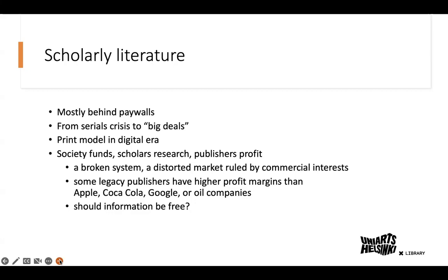The serials crisis means universities have money to buy even fewer journals. International commercial publishers introduced the 'big deal' model, selling journal bundles instead of single journals to universities — making individual titles cheaper but selling many unneeded journals at the same time. This is why UniArts library has journals in chemistry and other unrelated fields. The big deal model is no longer seen as a good solution.